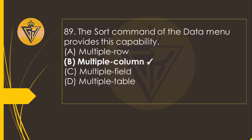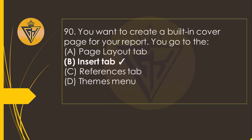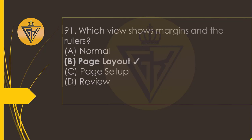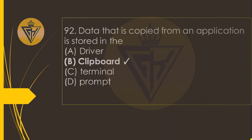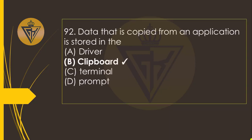The sort command of the data menu provides this capability — the option B: Multiple Column. You want to create a built-in cover page for your report; you go to the option B: Insert Tab. Which view shows margins and the rulers? Option B: Page Layout. Data that is copied from an application is stored in the option B: Clipboard.